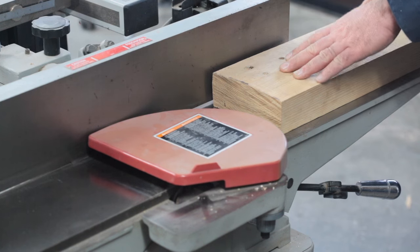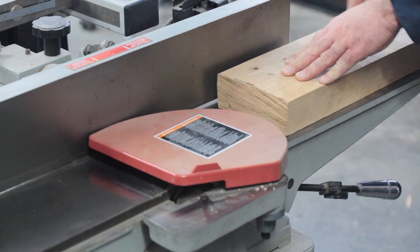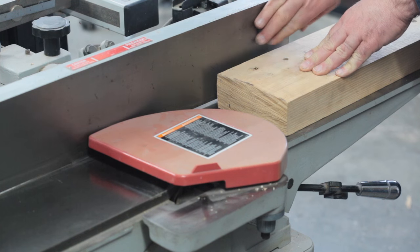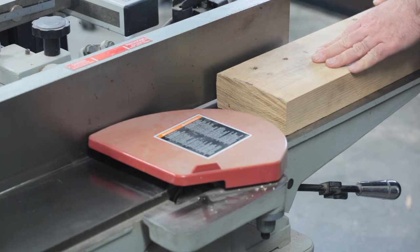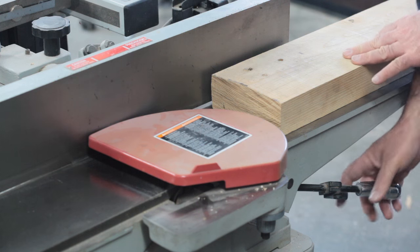We're at the jointer now. First of all the fence doesn't enter into this operation at all. I mean you can touch the fence with the wood as you work but it doesn't actually position the wood in any way. You're only milling that first face.